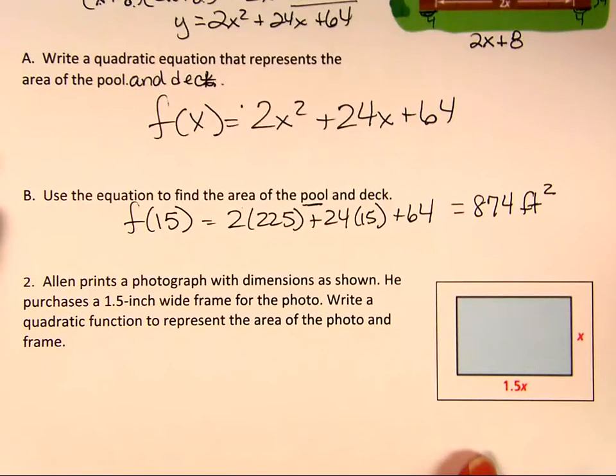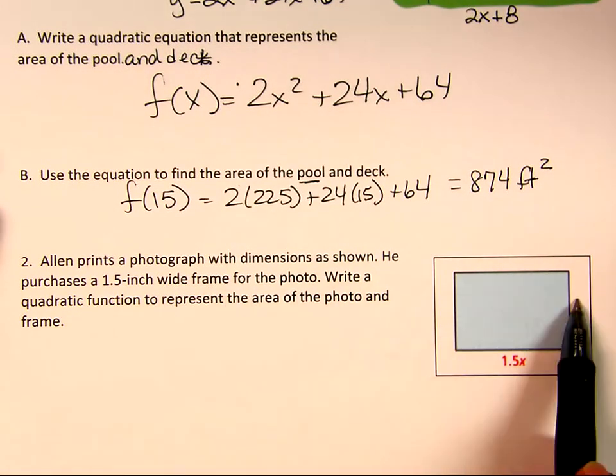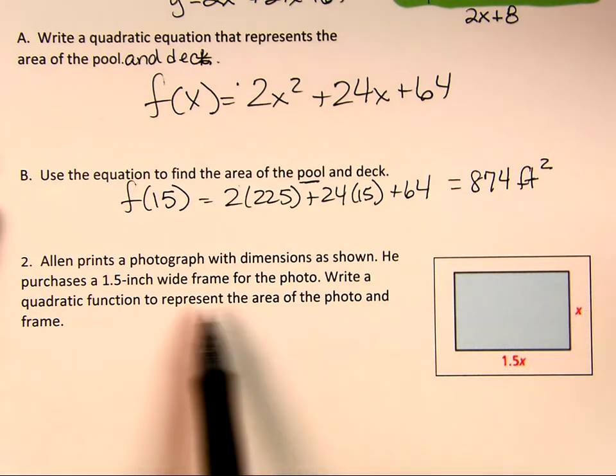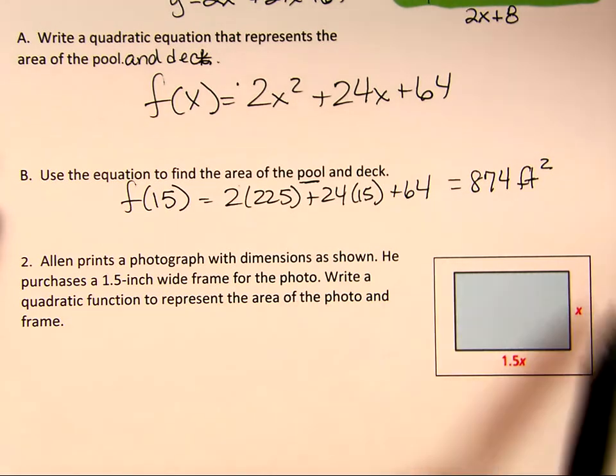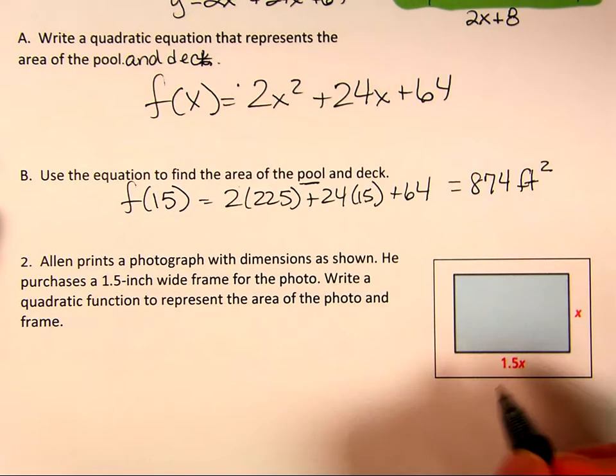All right. We are going to try another one. Alan prints a photograph with the dimensions shown. So x is a ratio of 1 to 1.5. And I'm going to put a frame. Write a quadratic equation that represents the area of the photo and frame.